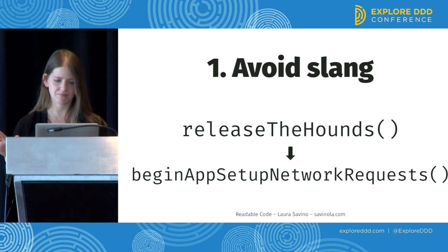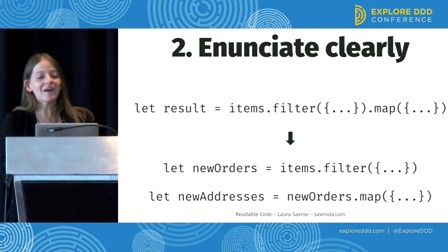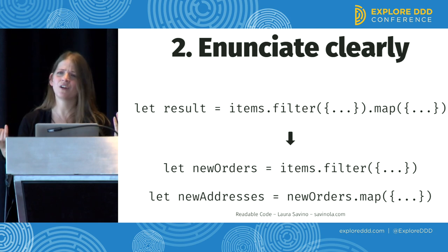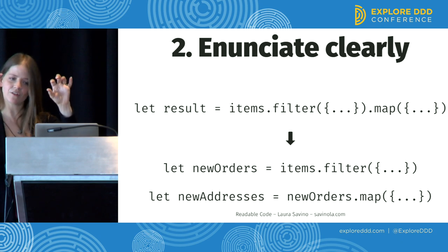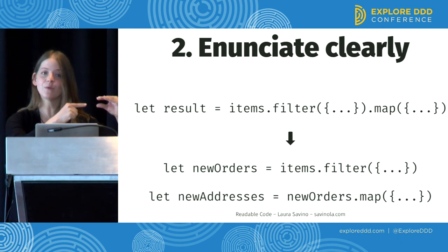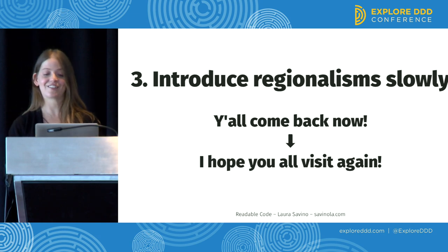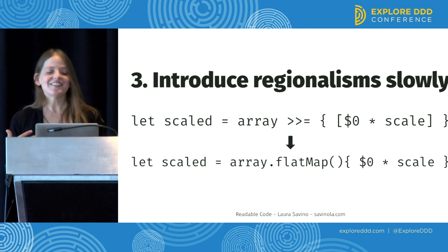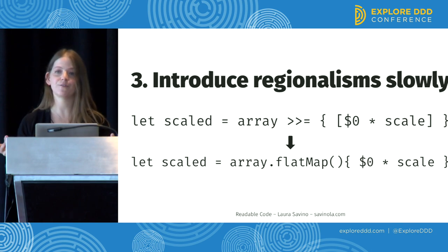Another example: you'll enunciate clearly. In American English, 'G-chat' means 'did you eat yet?' In code, enunciating clearly might mean you introduce some intermediate variables to label the steps of a calculation. You don't need them — I've gotten that comment on code review: 'you know you could do this in one line.' I know. But this is actually coming as close as you can to taping that warning label to the handle of your tool, because this extra label means that anyone who uses the result will know exactly what it's for. You'll also introduce regional dialect slowly — like 'y'all come back now' might confuse someone. In code, that means you might decide to wait to introduce things like custom operators. I'm not saying never use them, but think about non-native speakers in your programming environment before you introduce them everywhere.